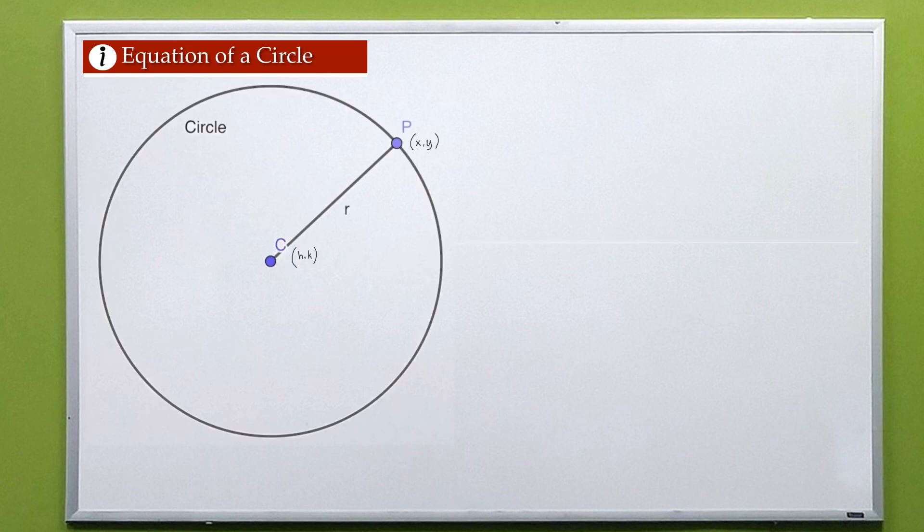The derivation of the equation of the circle is by the use of distance formula: d equals the square root of the quantity x sub 2 minus x sub 1 squared plus the quantity y sub 2 minus y sub 1 squared.